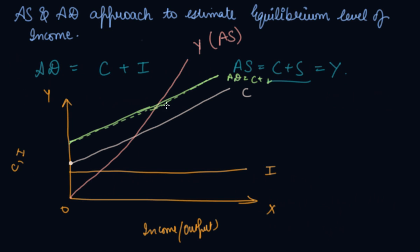When aggregate demand is equal to aggregate supply, this is the equilibrium level — where aggregate supply equals aggregate demand. If your aggregate demand is 80, your income should also be 80. This is how you find out the equilibrium level of income using the AS and AD approach.